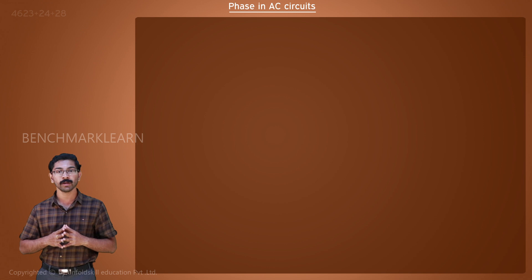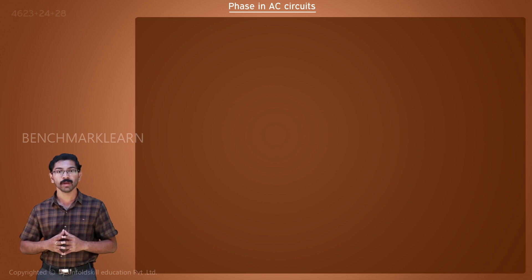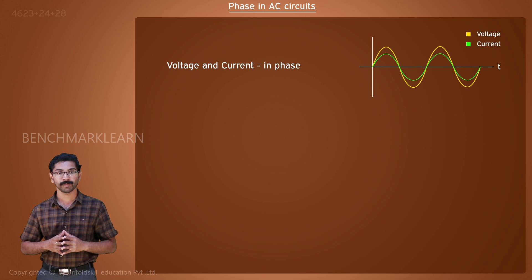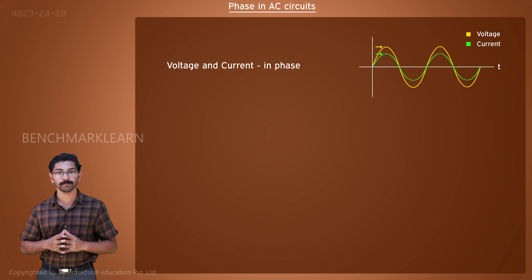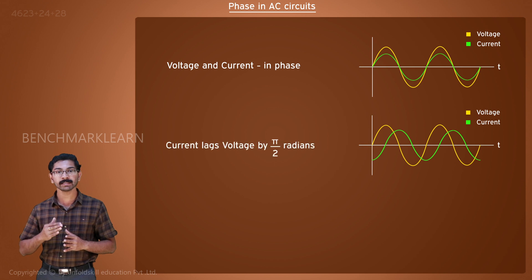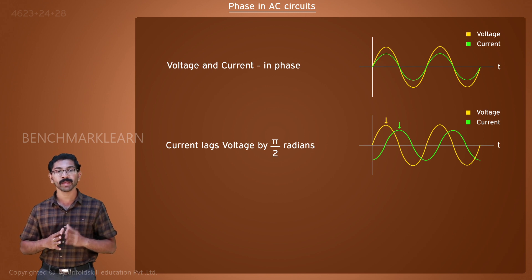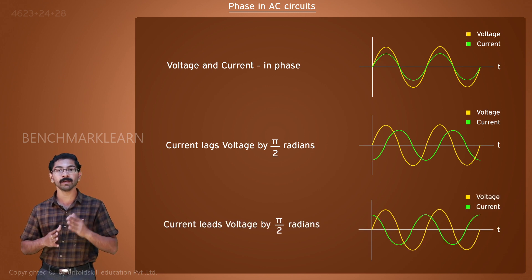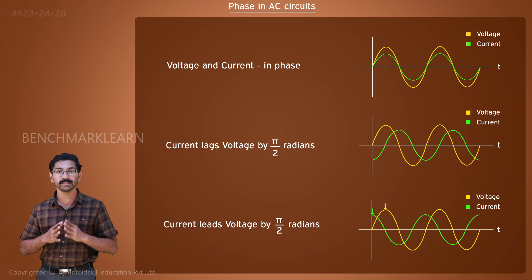Let us now compare the voltage-current relations of the three types of passive elements for an AC input. For a resistor, the current and voltage are in phase — they become zero at the same time and have maximum or minimum values at the same time. In the case of an inductor, the current lags the voltage by pi by 2 radians; current will have its maxima or minima after the voltage. For a capacitor, the current will lead the voltage by pi by 2 radians — the current reaches maximum before the voltage does. In both the inductor and capacitor cases, we say that the current and voltage are out of phase by pi by 2 radians.